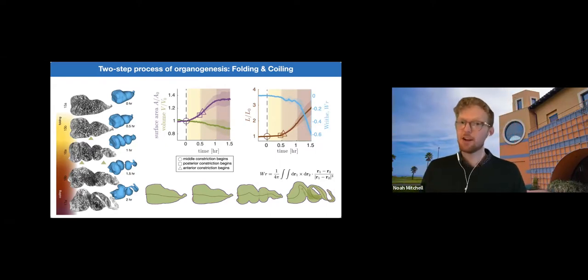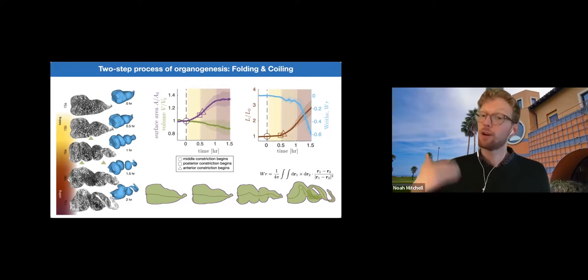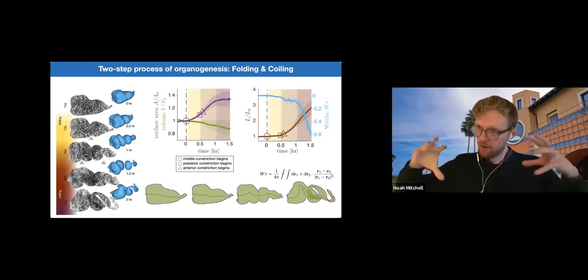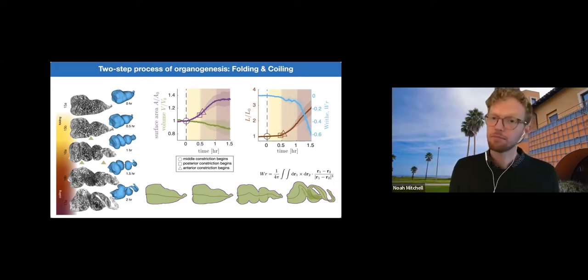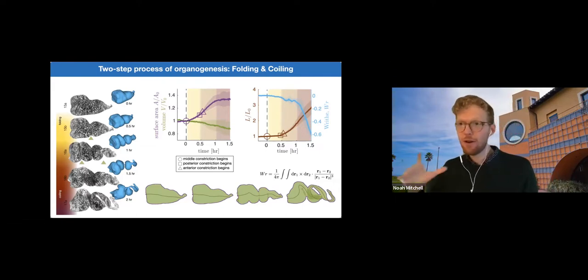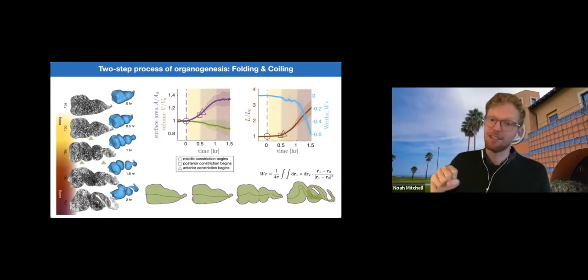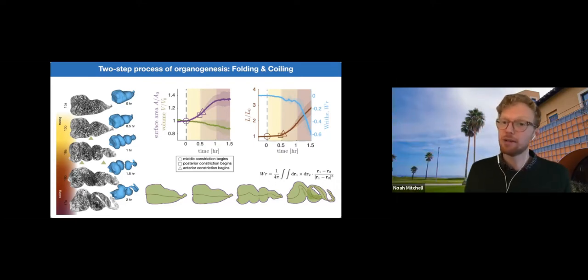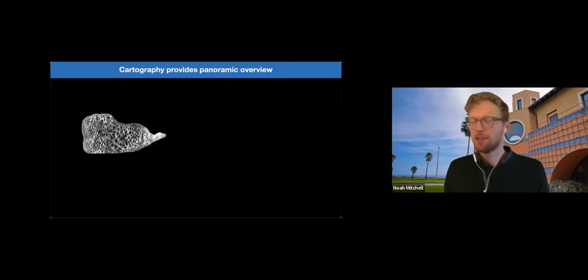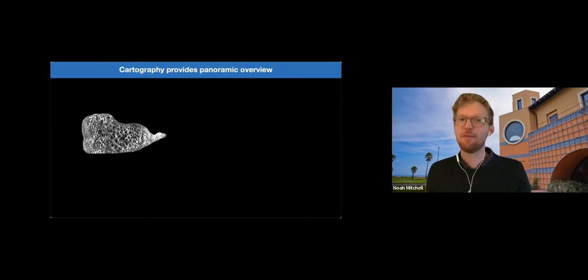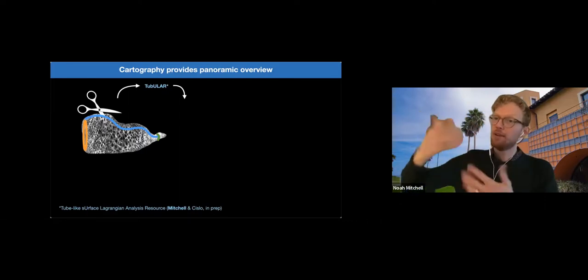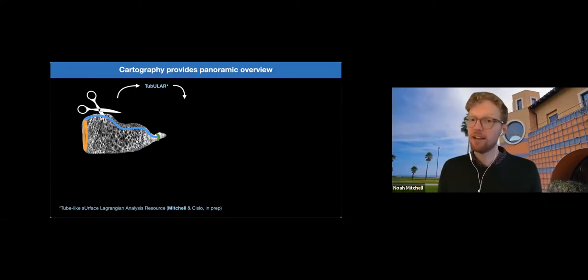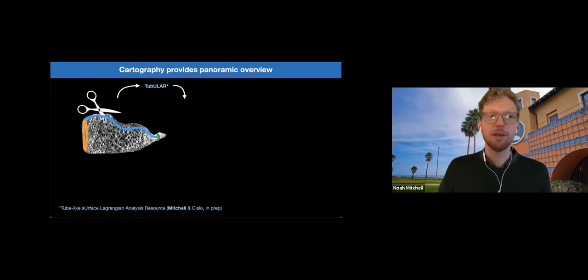So here in this talk, we'll focus on how this organ folds into these chambers, how it forms these constrictions. And with these global measurements in hand, we can now move into the tissue frame of reference and see how the tissue is deforming, how that relates to this global shape. And to do that, we created a new method. What we do is we cut the organ along its length, and we map the embedded image into the plane for analysis in this process that we dubbed tubular.